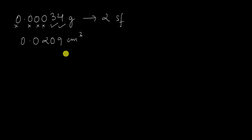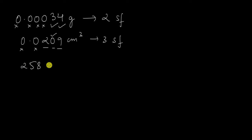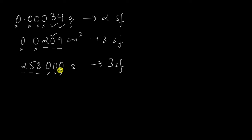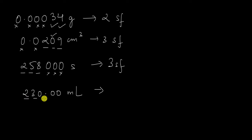What about 258,000 seconds? There are three significant figures: 2, 5, and 8. The trailing zeros are not significant because they come at the end of a number without a decimal. Finally, 230.00 milliliters — how many significant figures? The answer is five — all of them are significant.